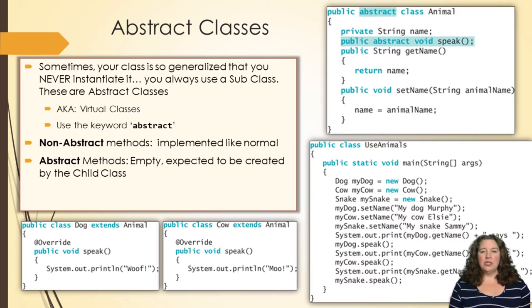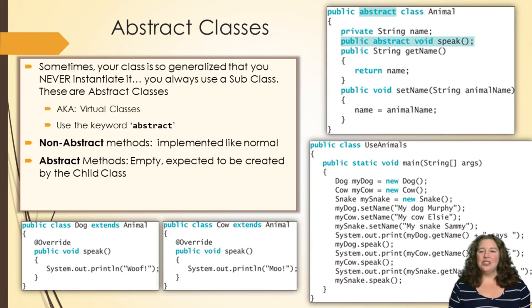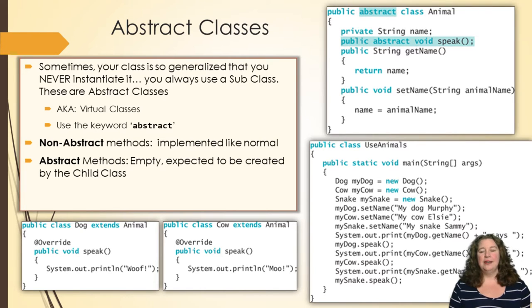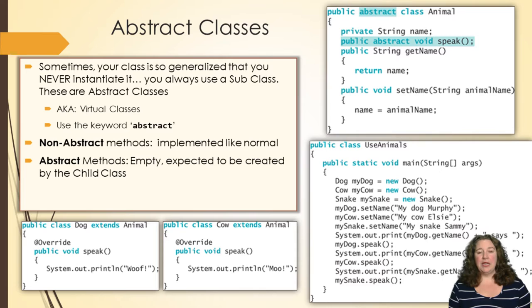But it's kind of useful to have an animal class because we're going to have an animal with a name and the ability to speak. We're going to create this animal class. Obviously in the real world you would have a lot more data fields than just name and speak, but we're just going to start with the two basics. We sometimes call these virtual classes because we don't actually ever instantiate an animal.